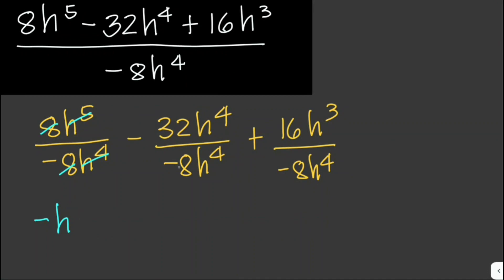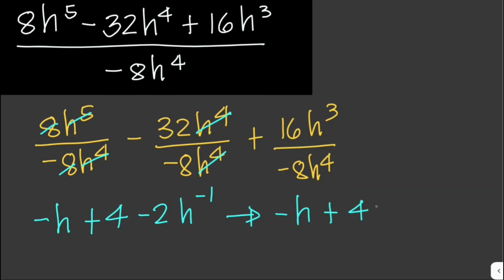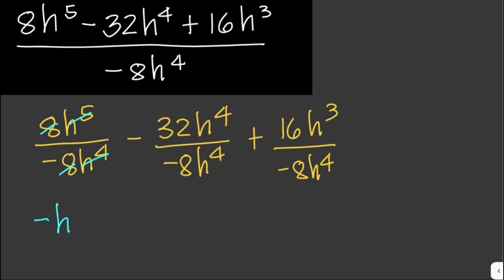For the second term, negative 32h⁴ divided by negative 8h⁴: negative divided by negative is positive, h⁴ cancels out, so 32 divided by 8 is 4. For the third term, positive 16 divided by negative 8 is negative 2, and h³ divided by h⁴ gives h to the 3 minus 4, which is h to the negative 1.